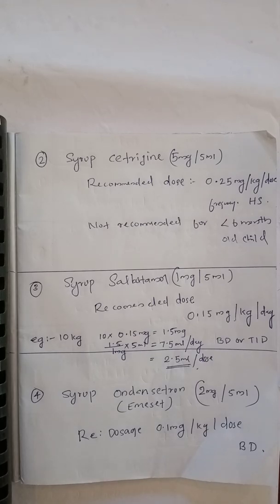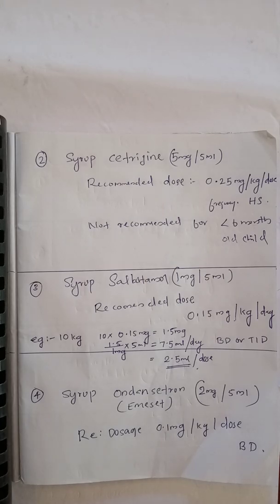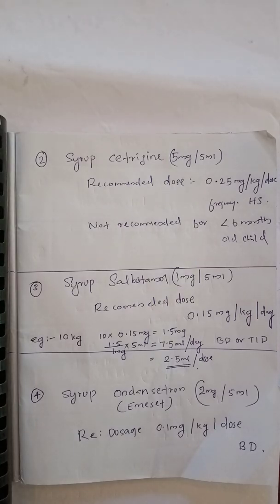Next: syrup salbutamol, available strength is 1 mg per 5 ml. The recommended dose is 0.15 mg per kg per day — note this is per day, not per dose. For example, if a baby is 10 kg: 10 × 0.15 mg = 1.5 mg per day.